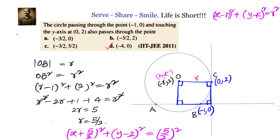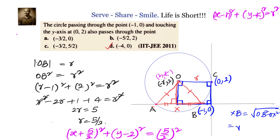Another way to solve this: join O to B and O to A. These two triangles are congruent since both have radius as the hypotenuse. So the chord distances XB and AX are equal. XB = √(OB² - OX²) = √((5/2)² - 2²) = √(25/4 - 4) = √(9/4) = 3/2. Since XB = AX = 3/2, the coordinates of A are (-1 - 3, 0) = (-4, 0).